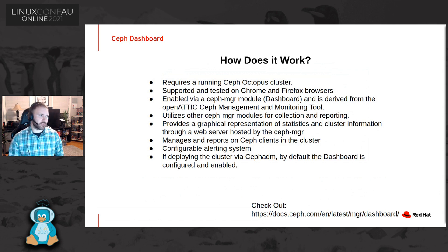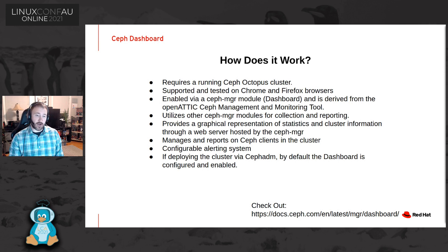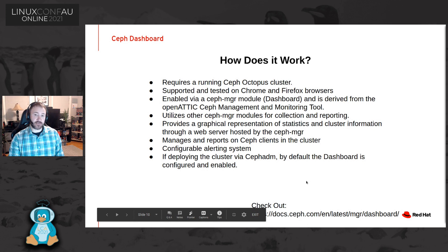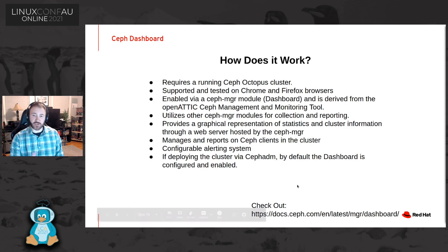Simply put, if you deploy a Ceph cluster on Octopus with CephADM, you'll get the Ceph dashboard by default unless you specify an argument during install to skip it. The dashboard runs inside the Ceph manager and uses other Ceph manager modules like Prometheus and Grafana for scraping data and populating graphs. Prometheus and Grafana run as containerized services on your nodes, along with your alert manager, which pushes alerts to the dashboard, and Prometheus scrapes data points from each node.